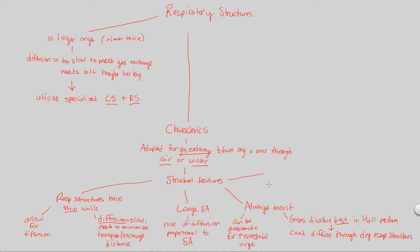The last structural feature of respiratory structures in larger organisms is that they have lots and lots of blood vessels near them. This is to ensure a high amount of exchange of material — specifically gas exchange. Blood will carry gas containing carbon dioxide and then pick up a different gas, like oxygen, at the lungs, so it can deliver oxygen to the rest of the body. Therefore, at the respiratory structure there are tons of exchange events occurring via these blood vessels.